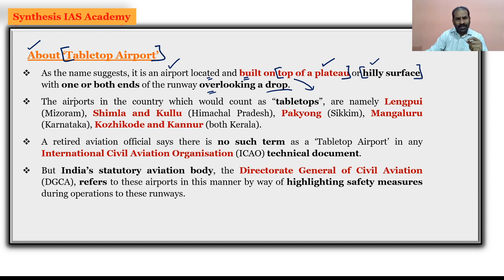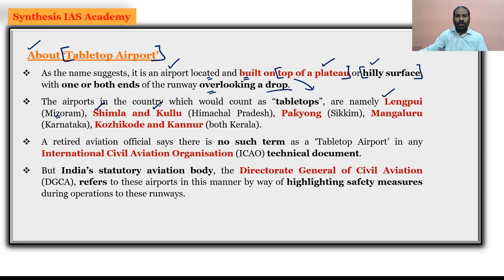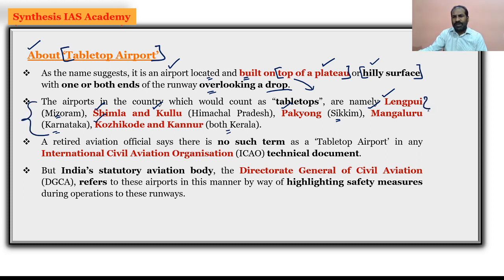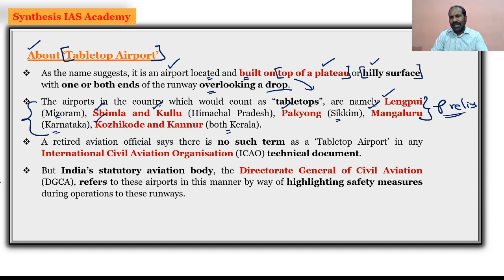Tabletop airports in India are located at Lengpui in Mizoram, Shimla and Kullu in Himachal Pradesh, Pakyong in Sikkim, Mangaluru in Karnataka, and Kozhikode and Kannur both in Kerala. This is crucial information for the Preliminary examination, as there could be a question asking which states have tabletop airports.